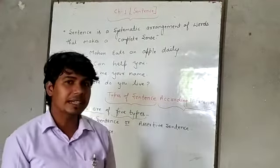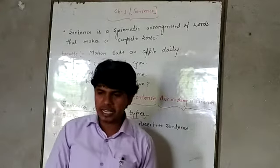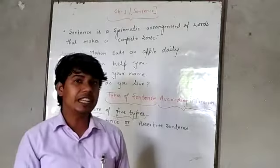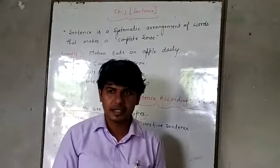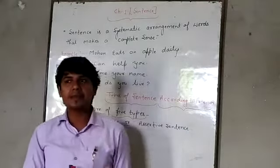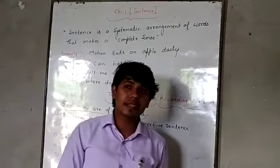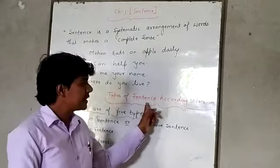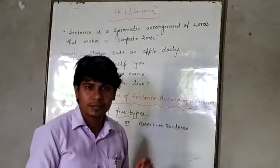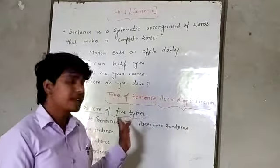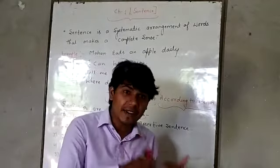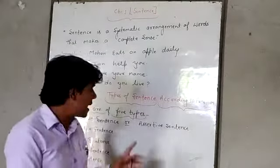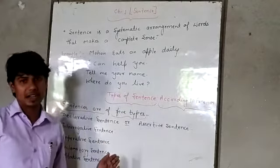Now we have to discuss the types of sentences. Sentences can be divided on two bases. If we talk about the types of sentences, then the first basis is types of sentences according to function. On the basis of function, we divide sentences into five parts.